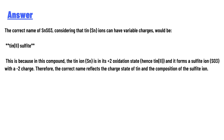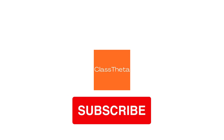The answer is tin(2) sulfite. This is because in this compound the tin ion is in its +2 oxidation state, and it forms a sulfite ion with a -2 charge. Therefore, the correct name reflects the charge state of tin and the composition of the sulfite ion.